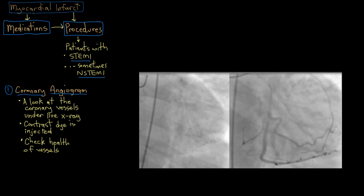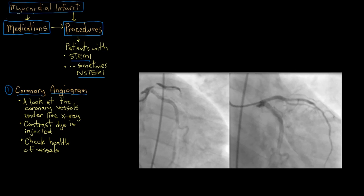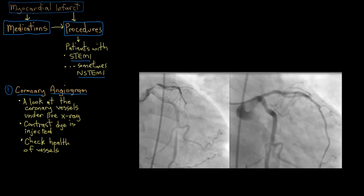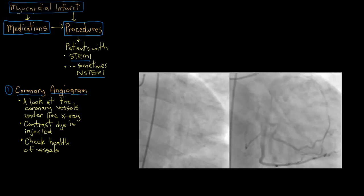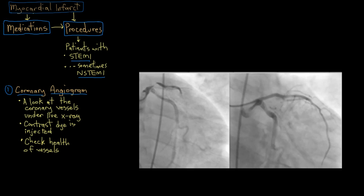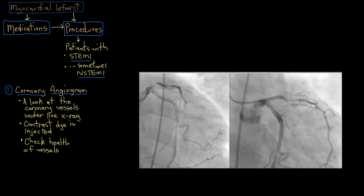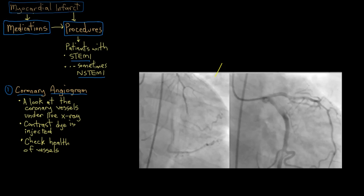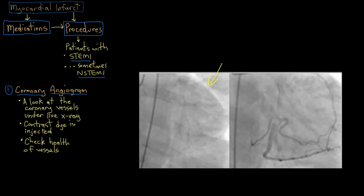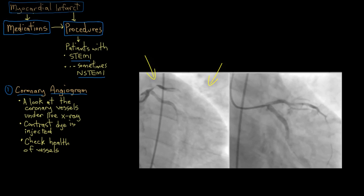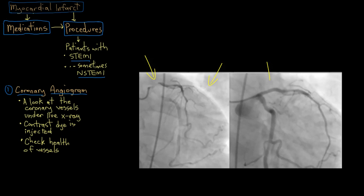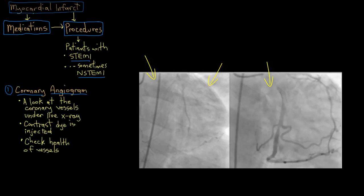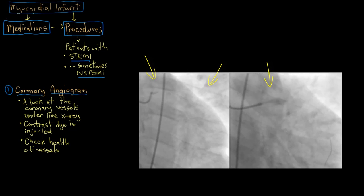So this is what a coronary angiogram looks like. You can see it's really a cool sort of dynamic picture. You can get a real-time look at how healthy the person's coronary arteries are. These are blood vessels, and this is actually the outline of the heart here. In this coronary artery here, there's a pretty severe blockage, a pretty severe narrowing of this coronary artery. And over here on the right, it's resolved, it's opened up. And that's after treatment.